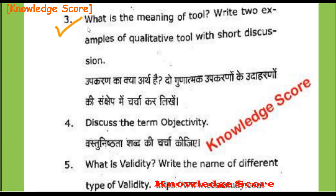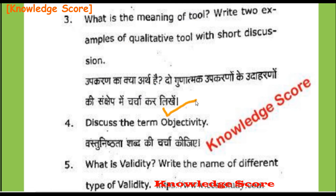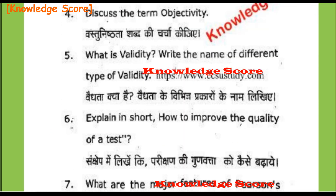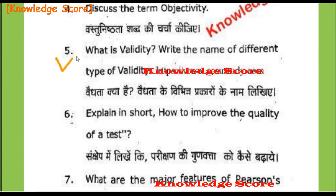Question 3, Section B: What is the meaning of tool? Write 2 examples of qualitative tools with short discussion — Upkaran ka kya arth hai? Do gunatmak upkaranon ke udaharanon ki sanchep mein charcha kar likhiye. Question 4: Discuss the term objectivity — Vastunishtata shabd ki charcha kijiye. Question 5: What is validity? Write the names of different types of validity — Vaidhata kya hai? Vaidhata ke vibhinn prakaron ke naam likhiye.